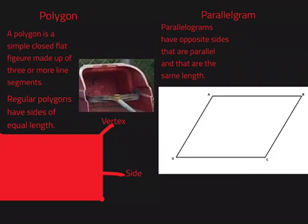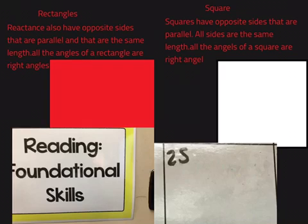Parallelograms have opposite sides that are parallel and are the same length. A rectangle also has opposite sides that are parallel and that are the same length. All the angles of a rectangle are right angles.